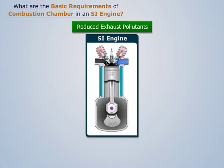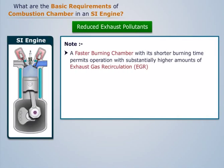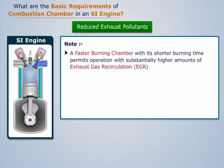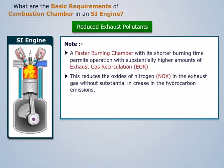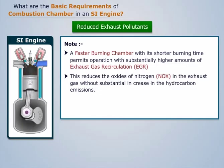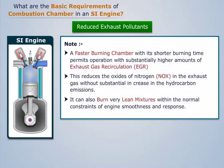Reduced exhaust pollutants. Exhaust pollutants can be reduced by designing a combustion chamber that produces a faster burning rate of fuel. A faster burning chamber with its shorter burning time permits operation with substantially higher amounts of exhaust gas recirculation (EGR). This reduces the oxides of nitrogen (NOx) in the exhaust gas without a substantial increase in hydrocarbon emissions. It can also burn very lean mixtures within the normal constraints of engine smoothness and response.